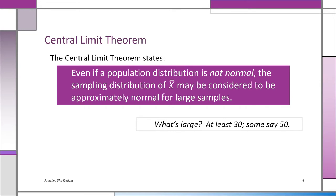The condition is that n, the sample size, should be large. What is large? That's going to be different depending on the statistician you talk to or the textbook you're looking at. Certainly at least 30 — some say 50, some say even higher.